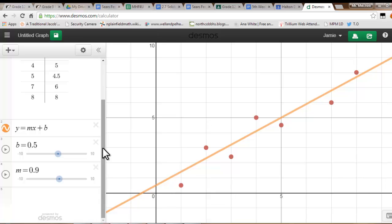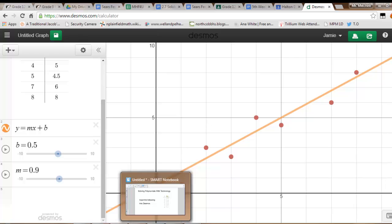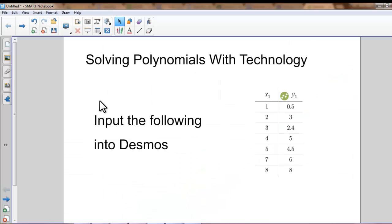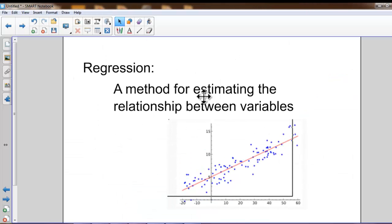So the question is, is there a best line of best fit? Is there one single line of best fit that is better than all of our guesses? To find that, we can use something called regression. Regression is just a method for trying to estimate the relationship between variables, whether or not one exists.